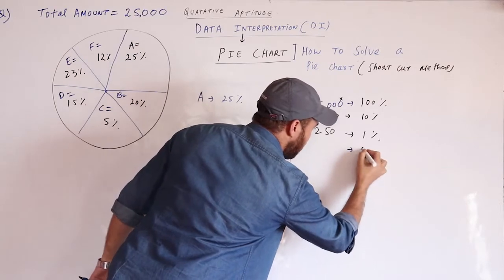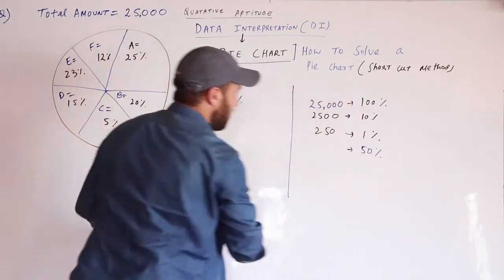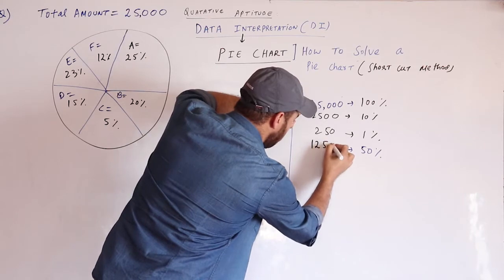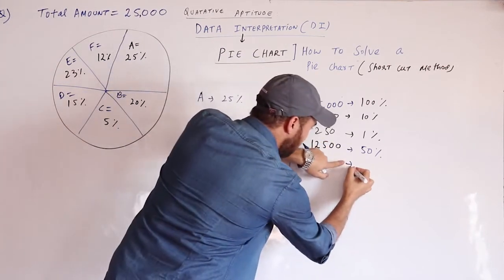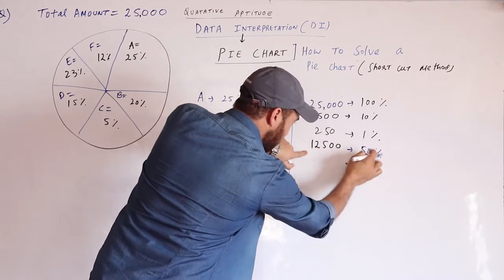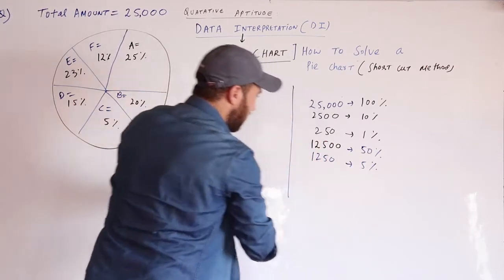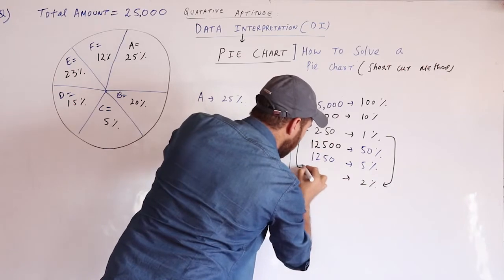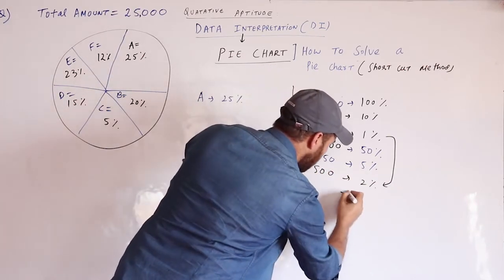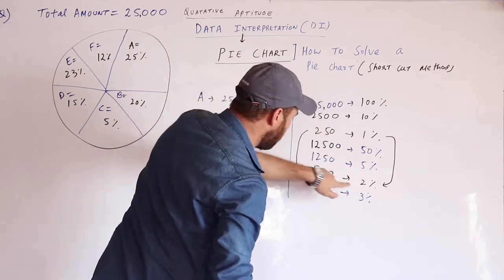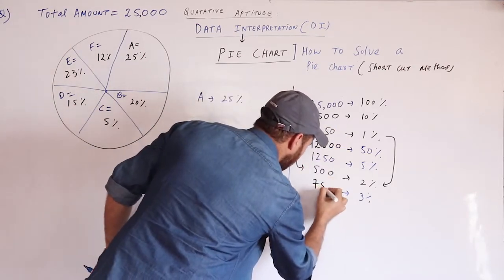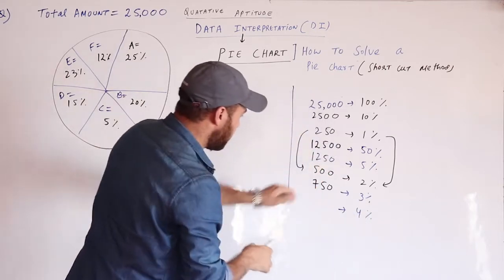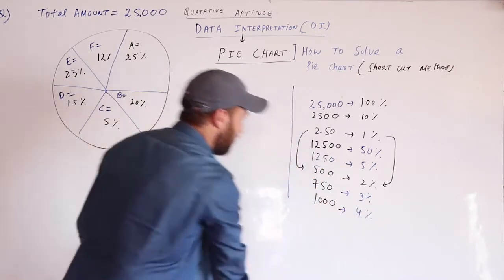If I take 50% of 25,000 — 50% is half of 100% — that means 12,500. If I take 5% of this amount, cancel one zero, that is 1,250. If 1% is 250, then 2% is 500. If I take 3%, that is 250 plus 500 equals 750. And 4% is 500 plus 500, which equals 1,000. Now it becomes easy to solve such questions.